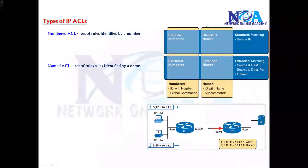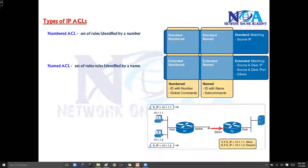The next thing we will try to understand is the different types of ACLs. We are talking about IP ACLs here — there will be separate ACLs like VLAN ACLs also within the VLAN as well. So here we are talking about IP ACLs, and in IP ACLs there are mainly two categories.